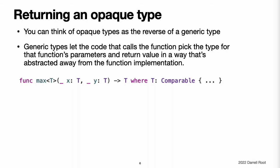For example, the function in this code returns a type that depends on its caller. The code that calls max chooses the values for x and y, and the type of those values determines the concrete type of T. The calling code can use any type that conforms to the Comparable protocol.